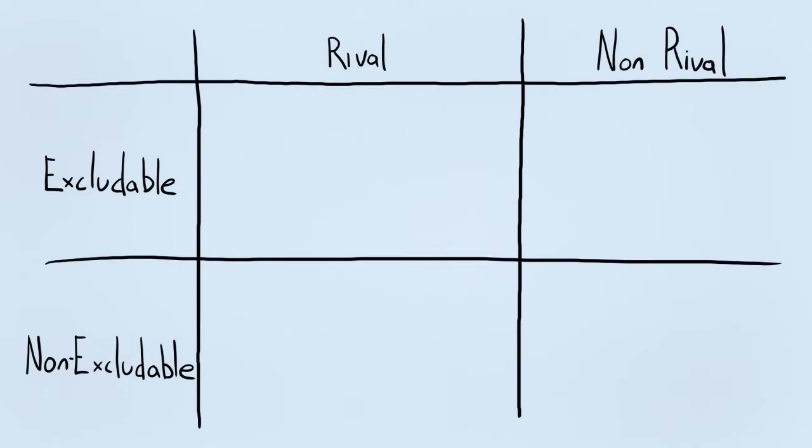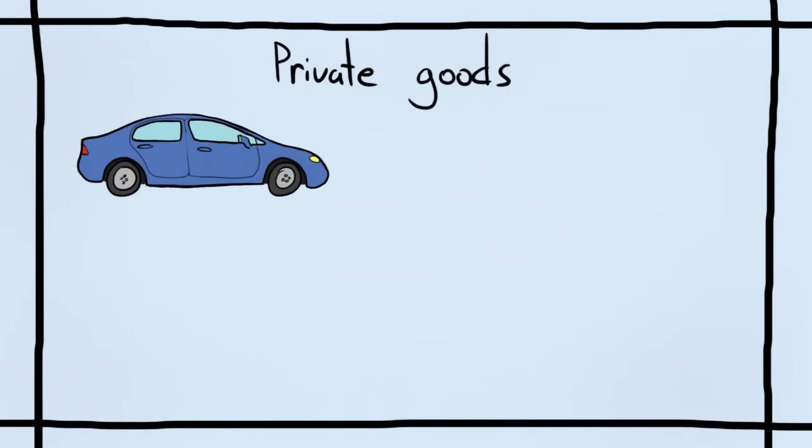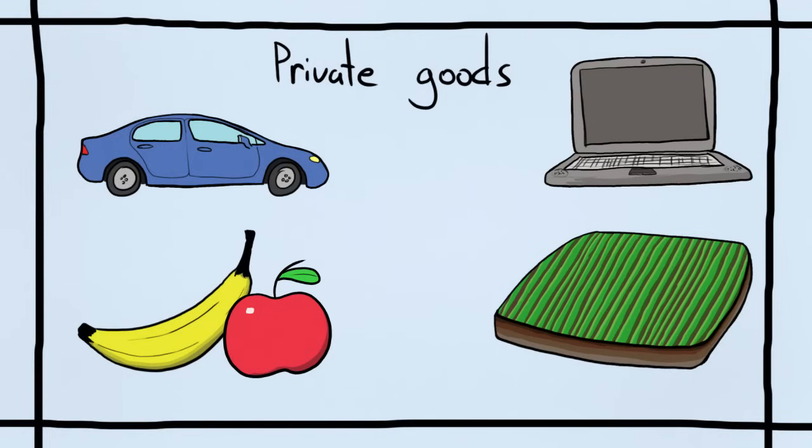Let's say everything can be either excludable or non-excludable, rivalrous or non-rivalrous. Things that are rivalrous and excludable we call private goods. These are cars, computers, food, clothing, private land. You have to pay for them and by acquiring them you are preventing someone else from having that same item.